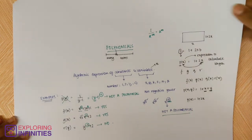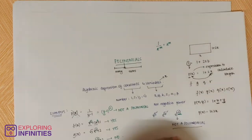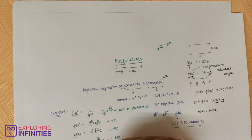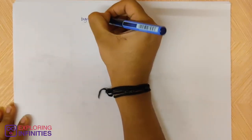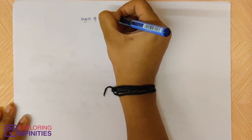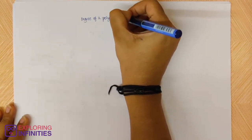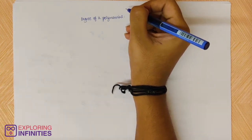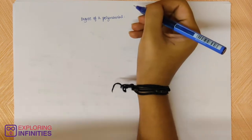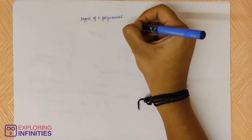So what is the degree of a polynomial? Simply put, the degree of a polynomial is the highest power of the variable.